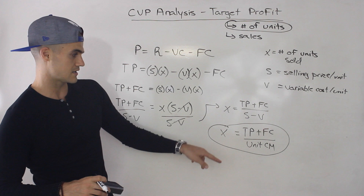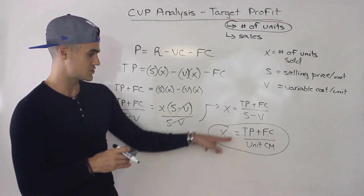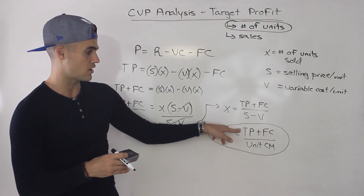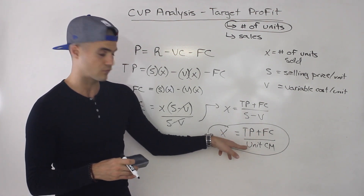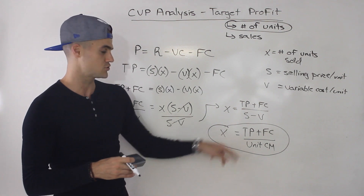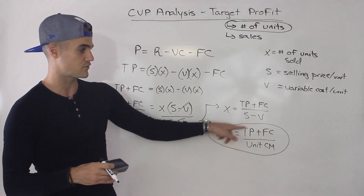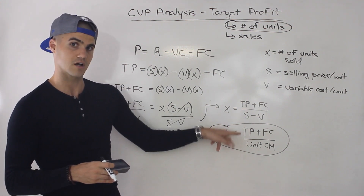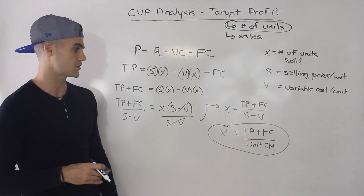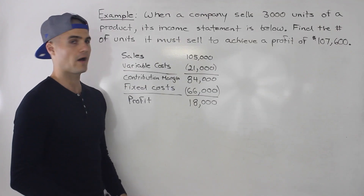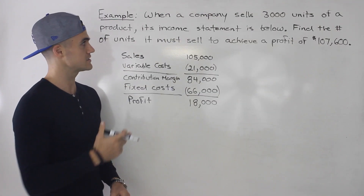So the difference between this and breakeven is just the target profit. Before it was just fixed costs over the unit contribution margin. Now it's target profit plus fixed cost over the unit contribution margin. Let's show how all of this works through an example.